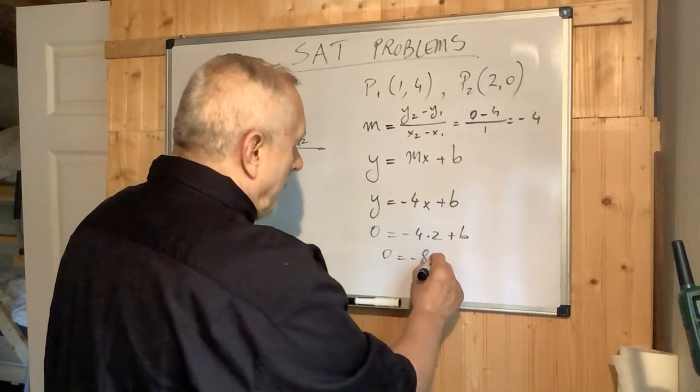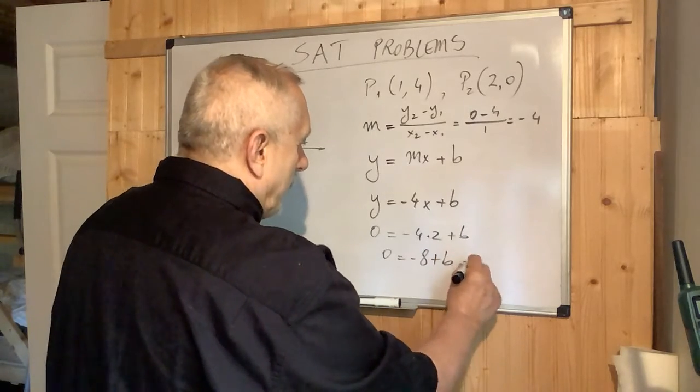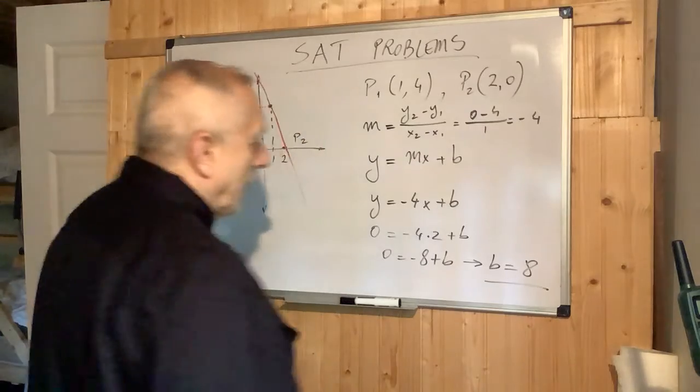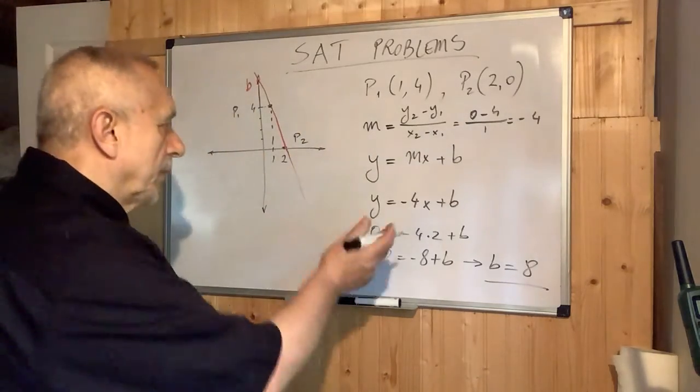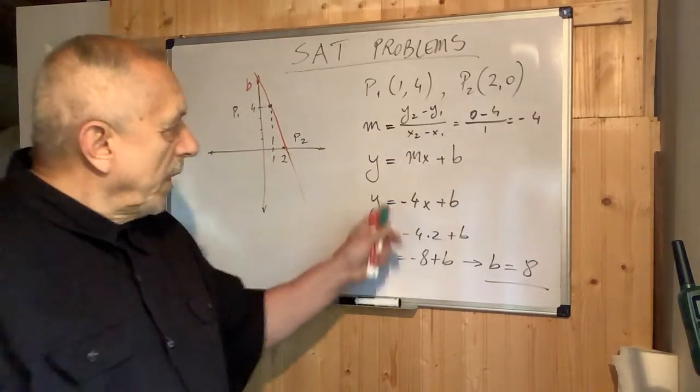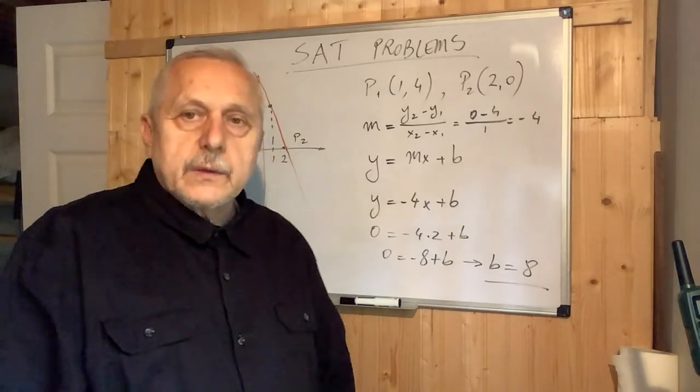B equals 8. So the formula will be y = -4x + 8. Thanks!